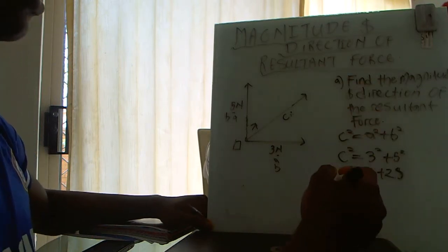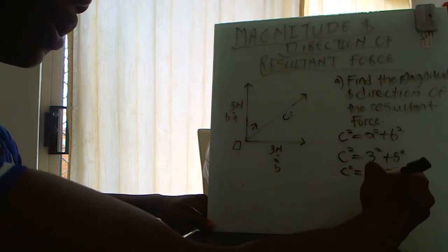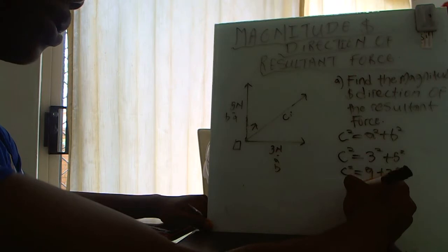Sorry about my handwriting, it's just hard to write with this and with such a small board. Nine plus twenty five gives you thirty four, so c squared equals thirty four.